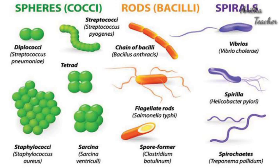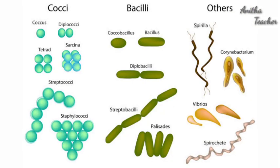It is the rigid cell wall of bacteria that determines the shape of the bacterial cell. Bacterial cells may be spherical, elongated rods, helical rod-like, or comma-shaped. Some bacteria keep changing their shape depending upon the type of environment and nutrients available to them. Let's discuss the shapes of bacteria one by one.